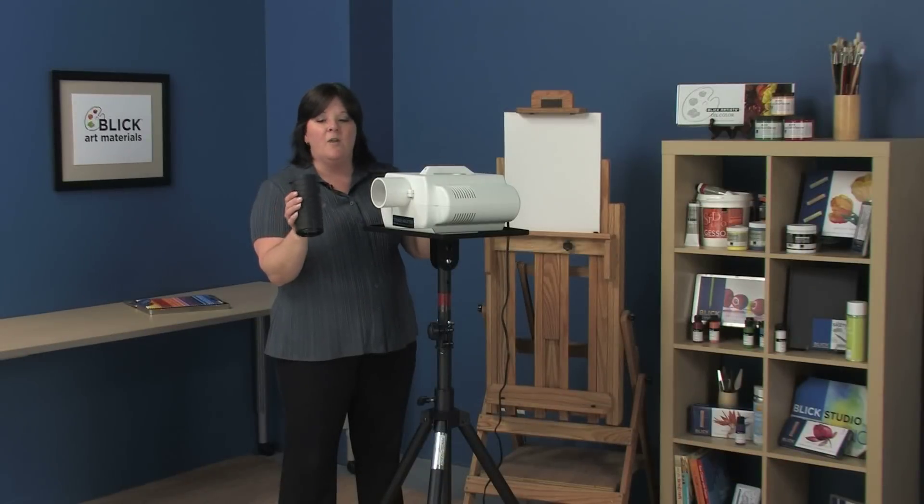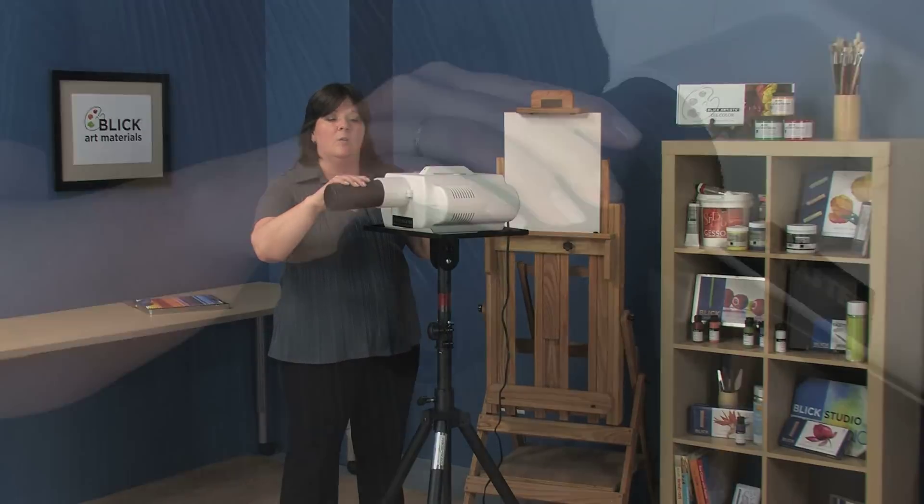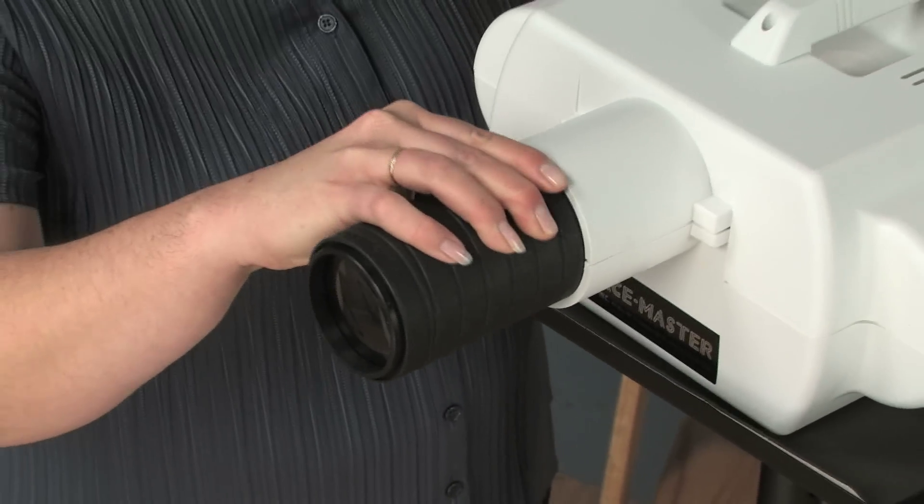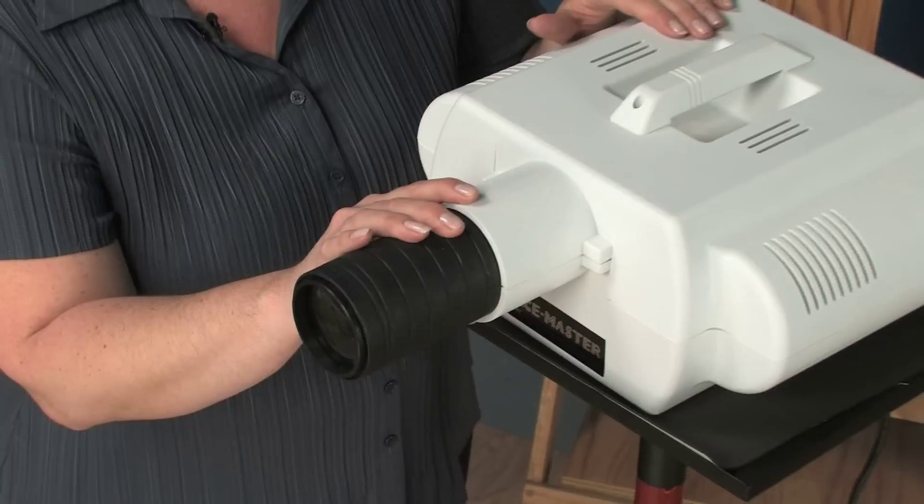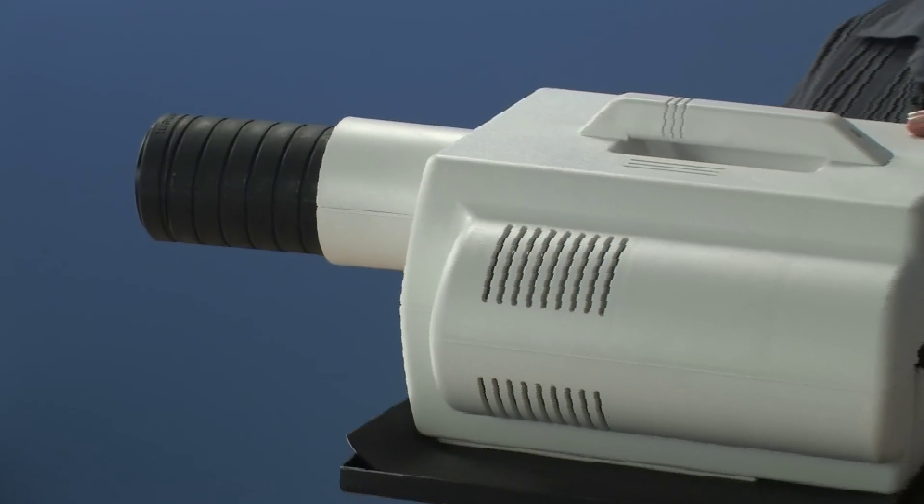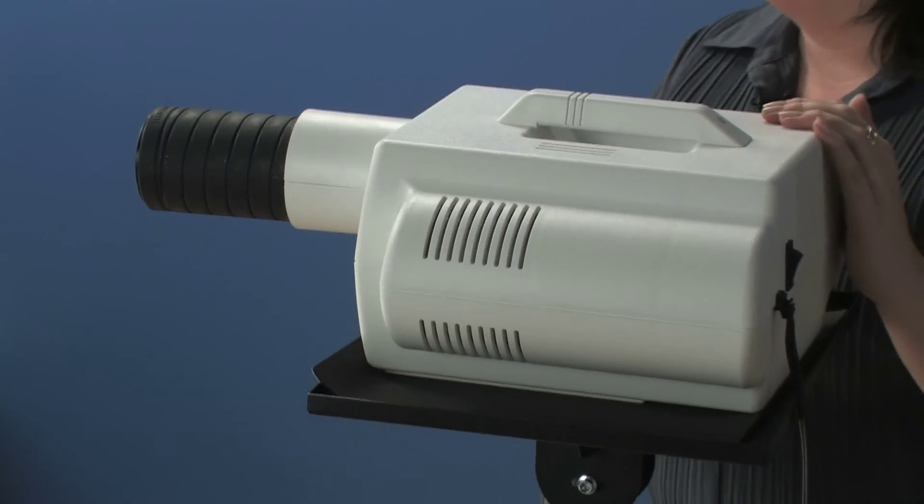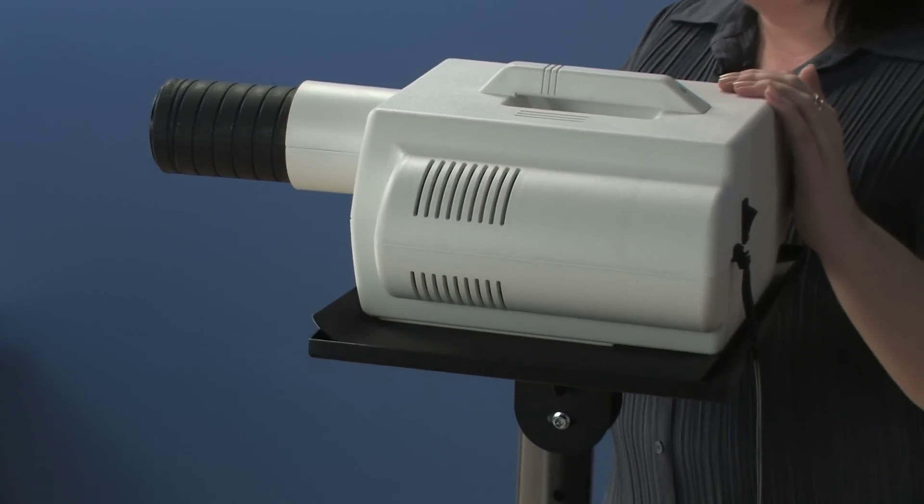This model here offers a reduction lens and enlargement lens. To reduce you would insert the reduction end into the projector. To enlarge you would insert the enlargement lens. The Tracemaster Deluxe model has a five element lens which would show you the intricate parts of the photo and the fine detail.